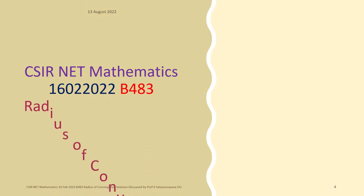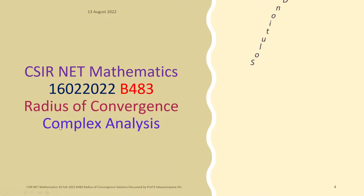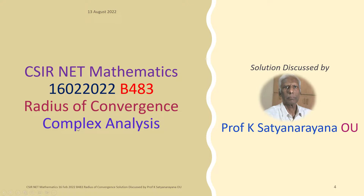We will now discuss the solution of a problem from the section Complex Analysis. The problem is the radius of convergence of a given series in the given context. This question appeared in CSIR National Eligibility Test held on 16 February 2022, and the problem is from section B.